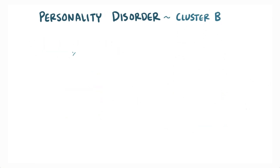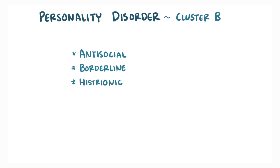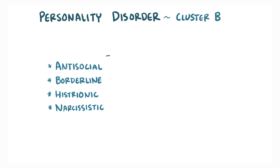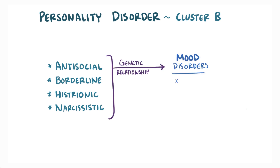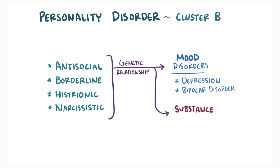Cluster B includes Antisocial Personality Disorder, Borderline Personality Disorder, Histrionic Personality Disorder, and Narcissistic Personality Disorder. All four of these have a genetic relationship with mood disorders, like depression and bipolar disorder, as well as substance abuse disorders.